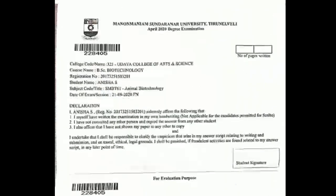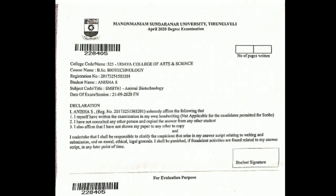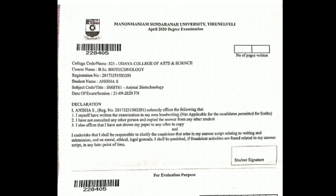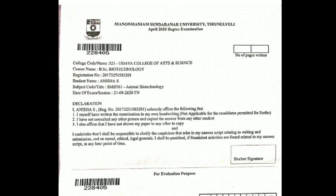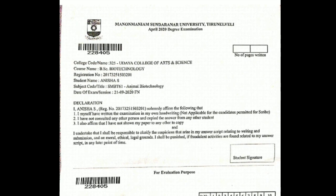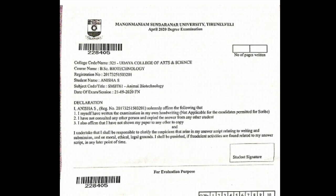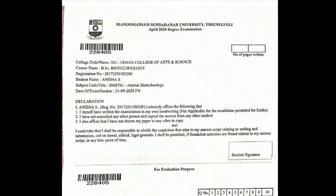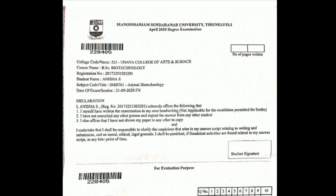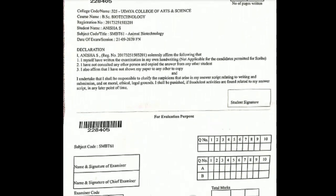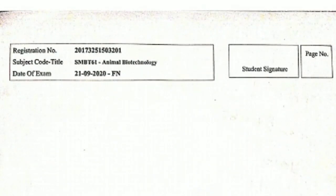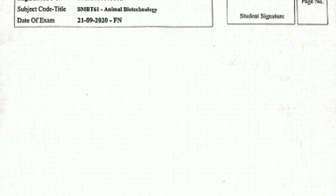There are two pages in the pre-exam document. The first page has a barcode. You can write the number of pages and your name — this is the basic information. You will also need to read and sign. For evaluation purposes, use the university value. The second page contains the registration number, subject code, and date of exam.